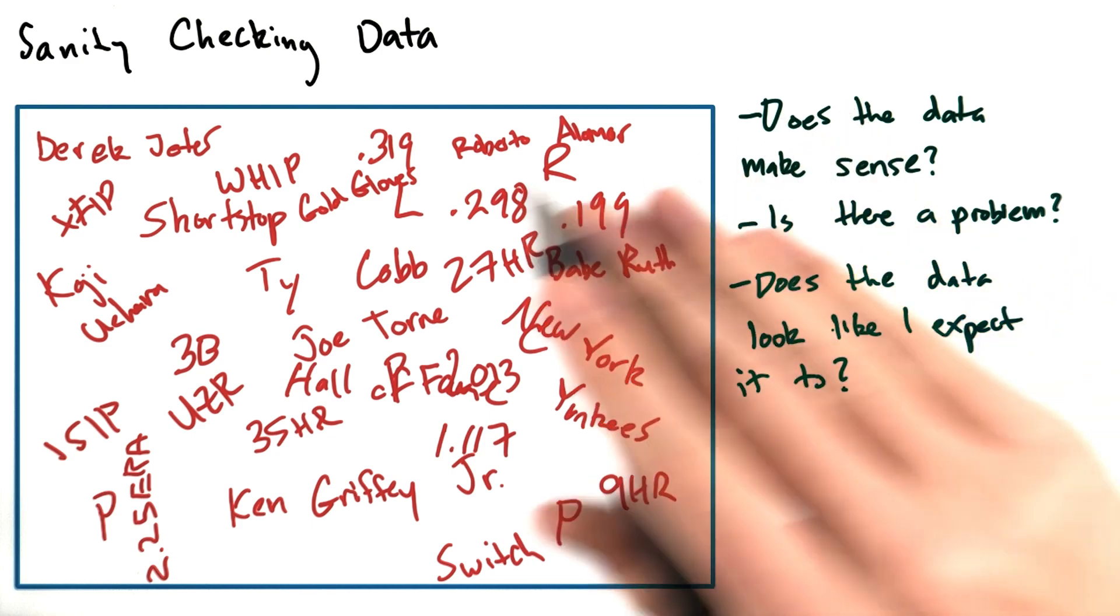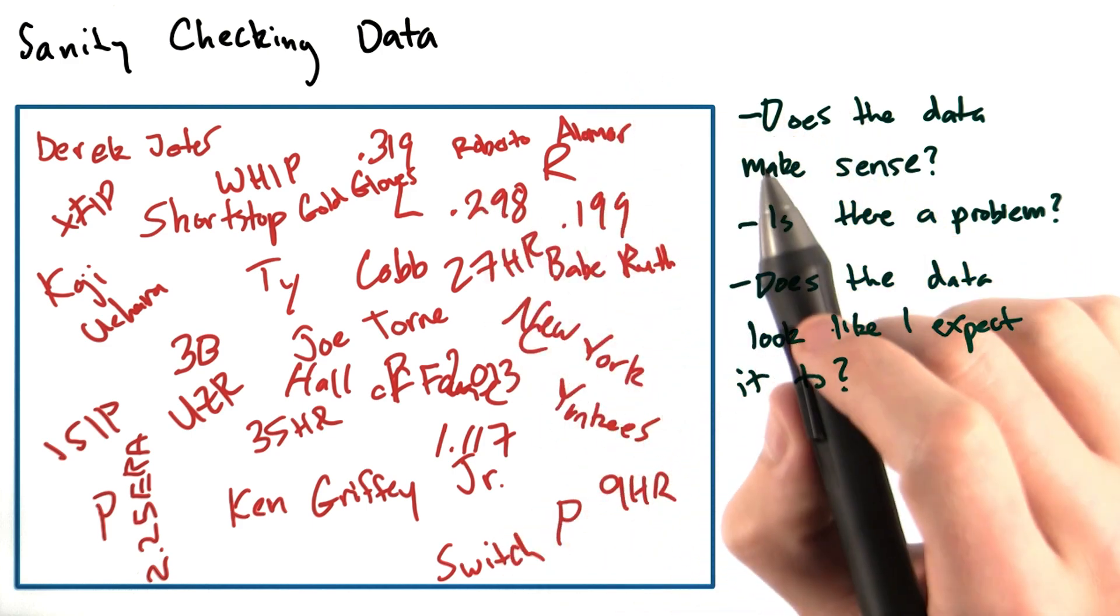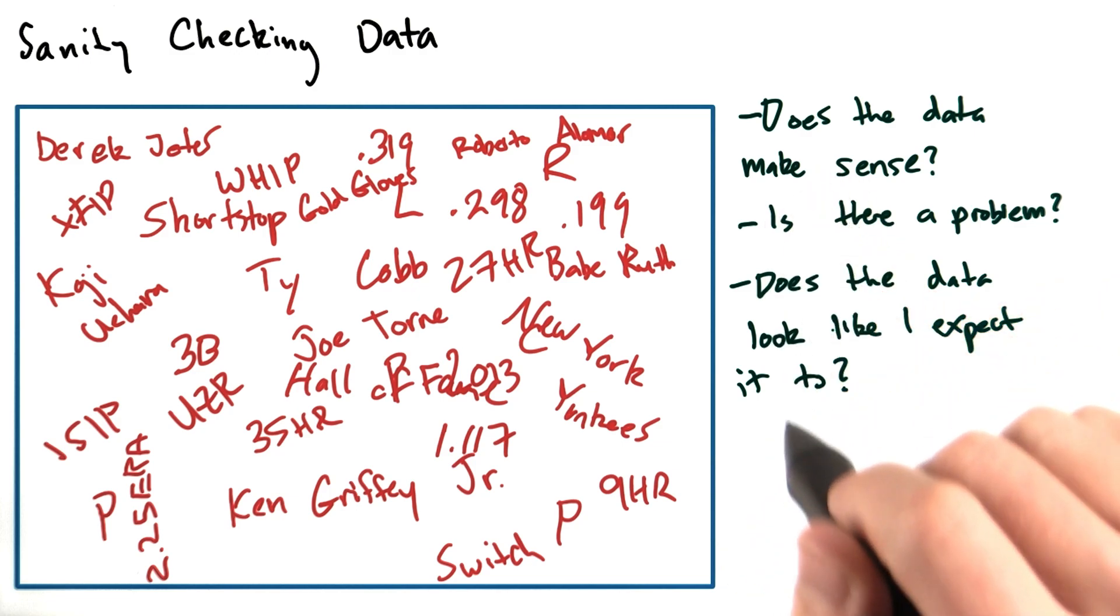However, to do just the bare amount of sanity checking, pandas data frames do have a useful method called describe.